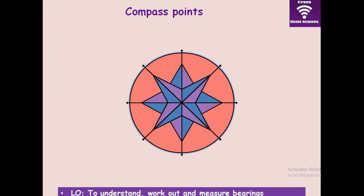Now let's talk about the compass. The compass is the instrument that you normally use for bearing. When ships or aircraft are navigating, they use the compass to know their actual positions. A compass basically always has north, south, east, and west. Remember, east is always to your right and west is always to your left — never mix the two.